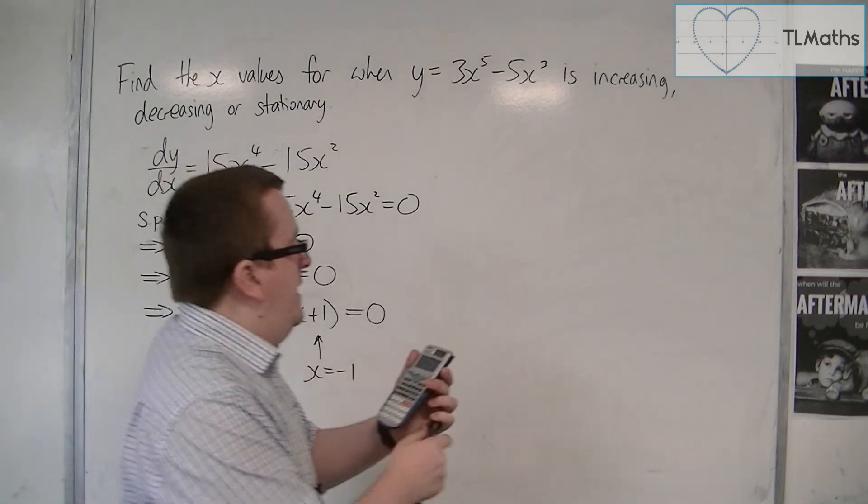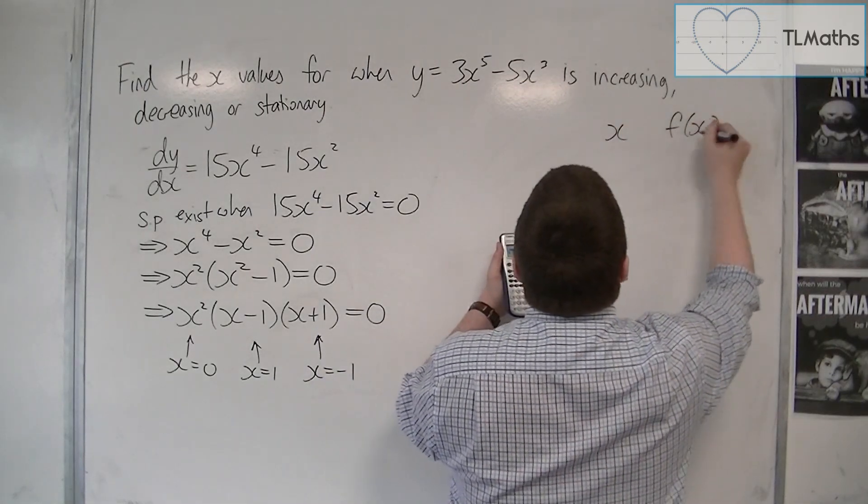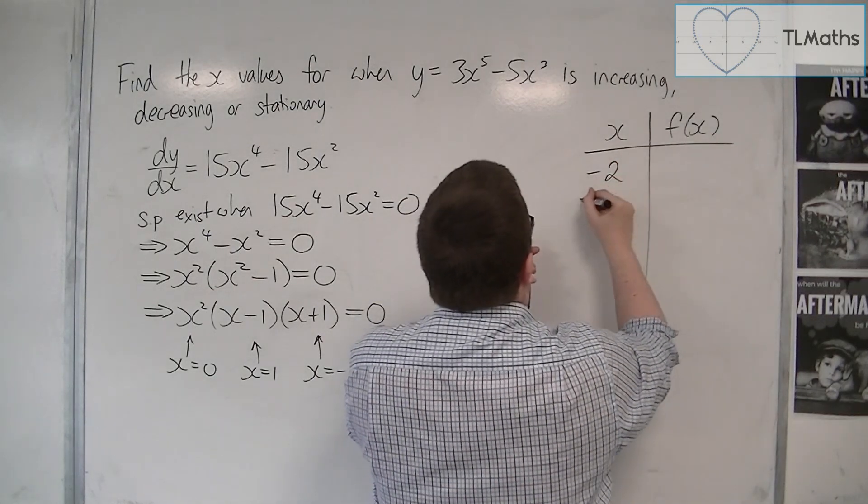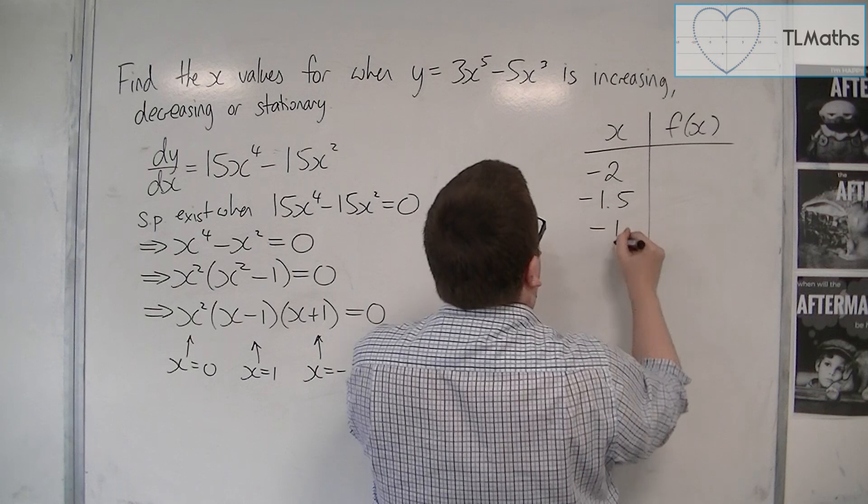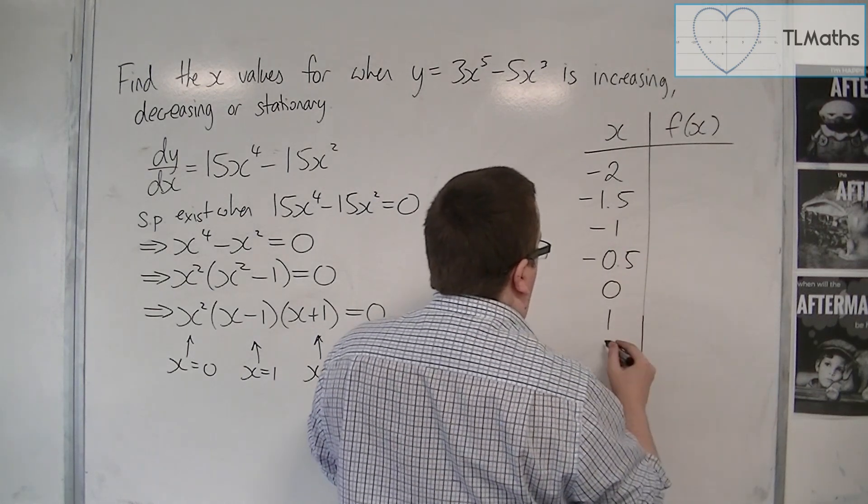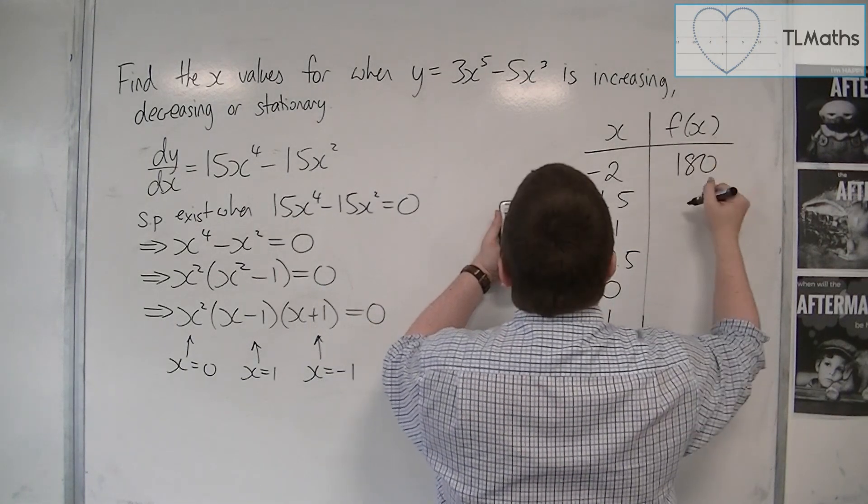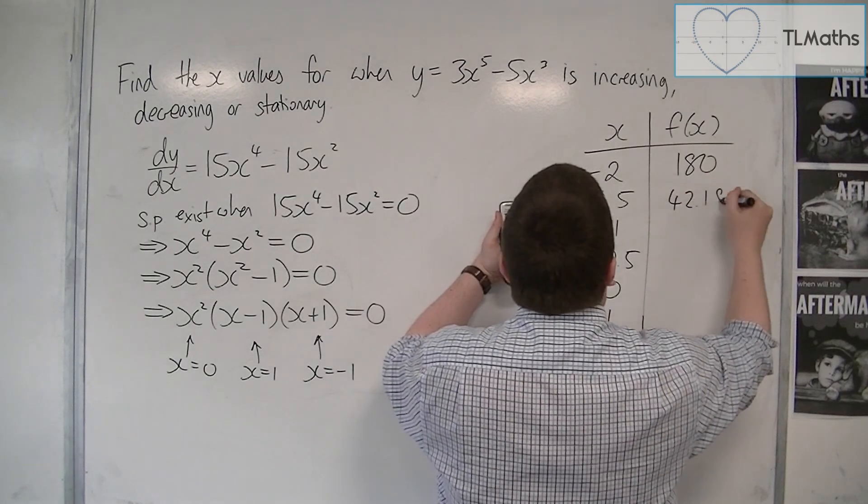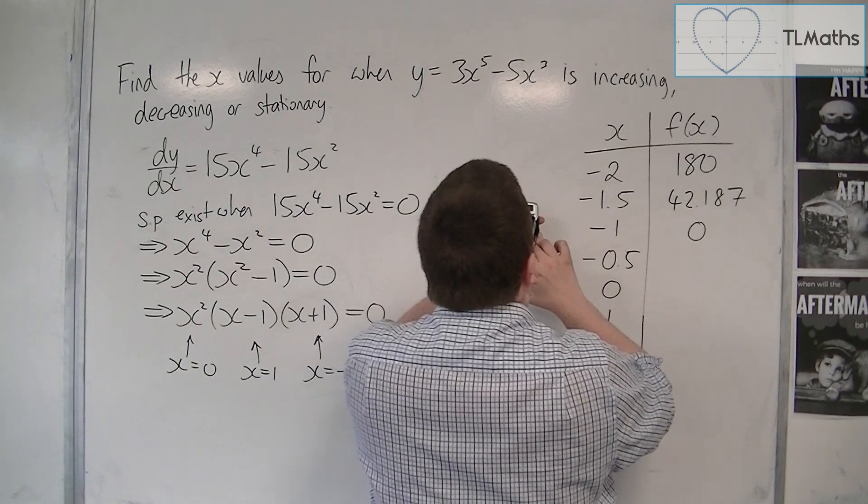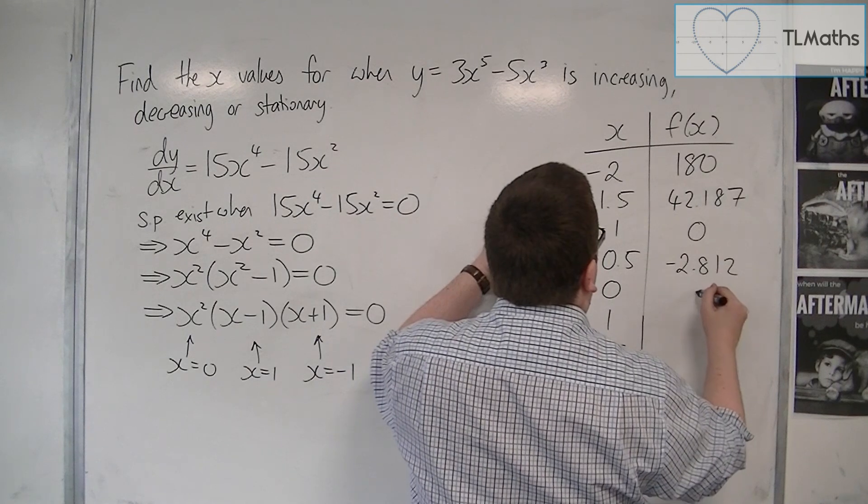So we should then get a table. So we've got x values and f of x values. We have minus 2, minus 1.5, minus 1, minus 0.5, 0, 1, 1.5 and 2. And here we have 180, 42.187. Then we have the 0. Scroll down. Minus 2.812. Then we've got 0.